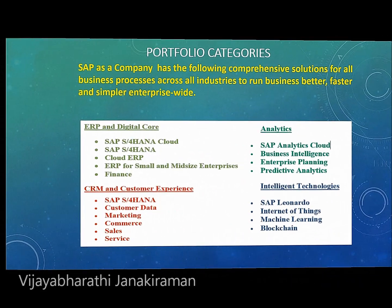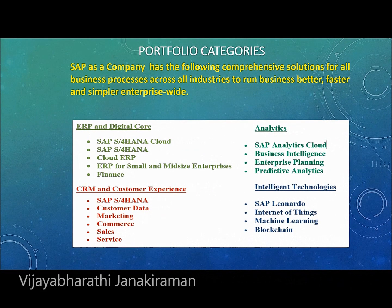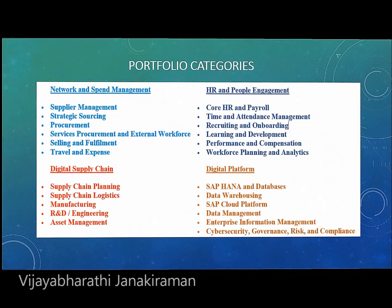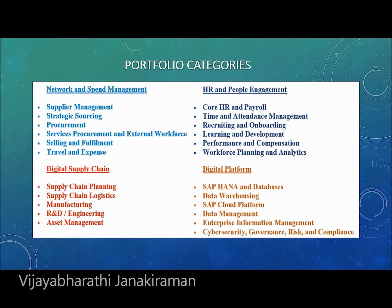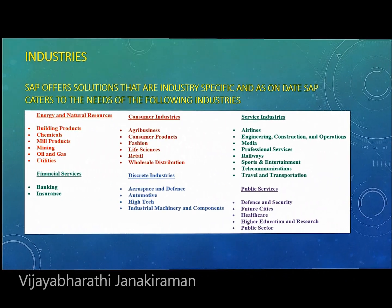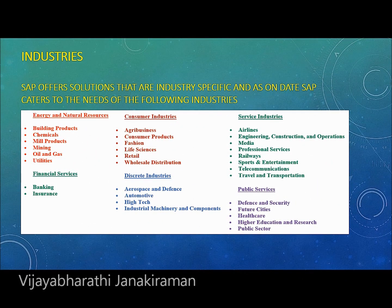Over the years, SAP has widened its product categories. Let's have an overview of the portfolio categories that SAP provides across industries. The products include ERP and Digital Core, Analytics, CRM and Customer Experience, Intelligent Technologies, Network and Spend Management, HR and People Engagement, Digital Supply Chain, and Digital Platform. SAP also supports industries including Energy and Natural Resources, Consumer Industries, Service Industries, Financial Services, Discrete Industries, and Public Services.